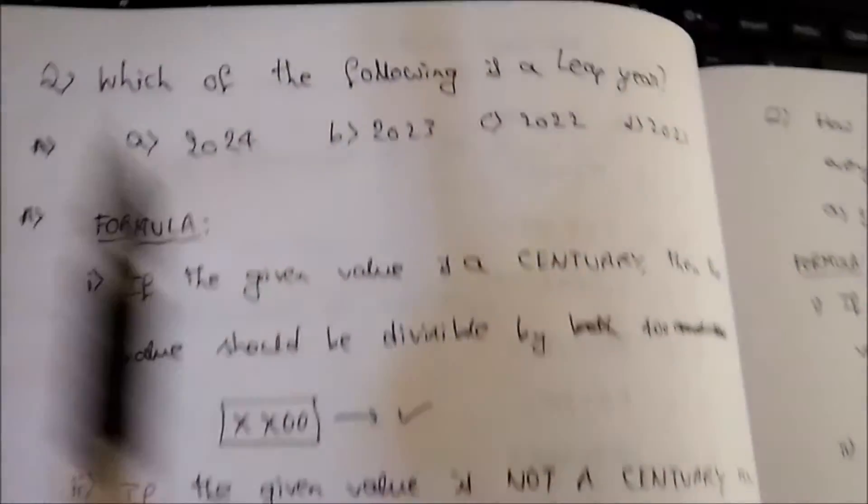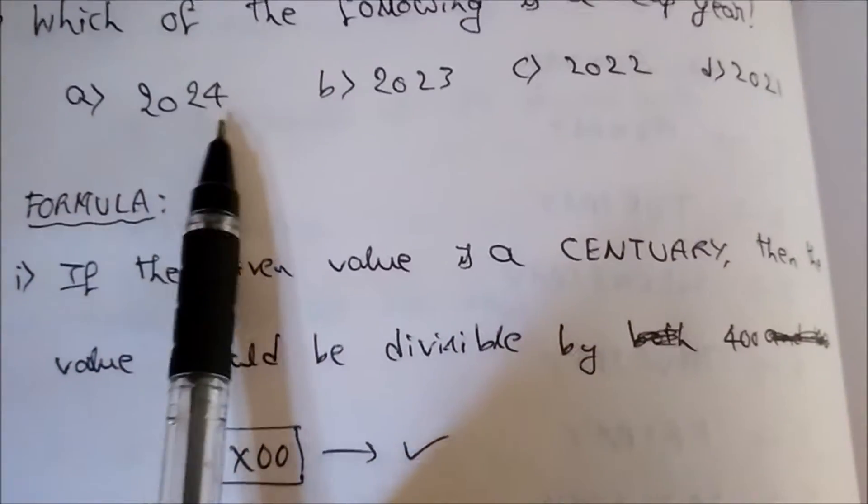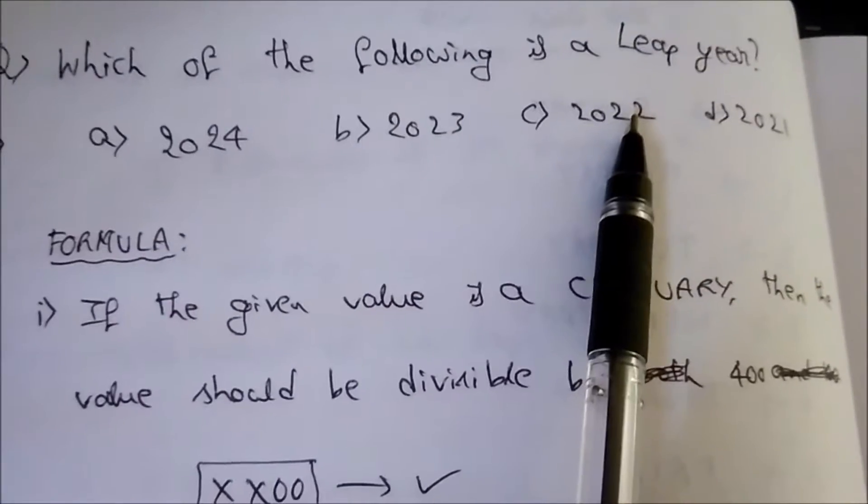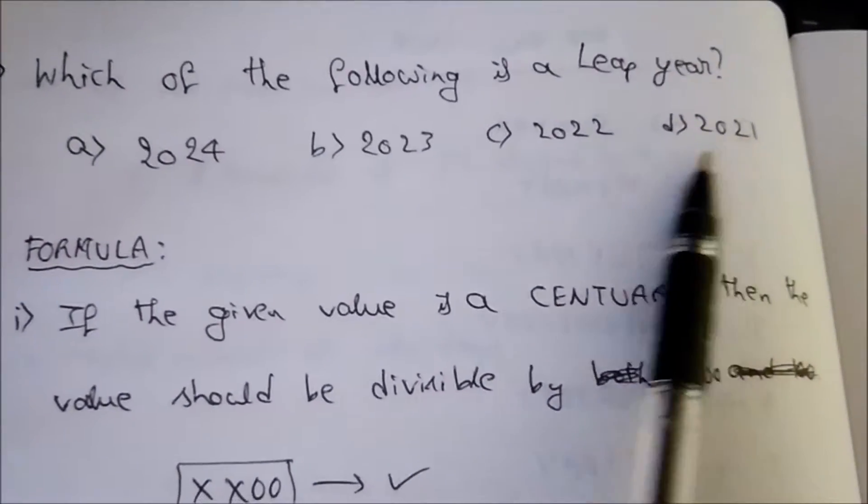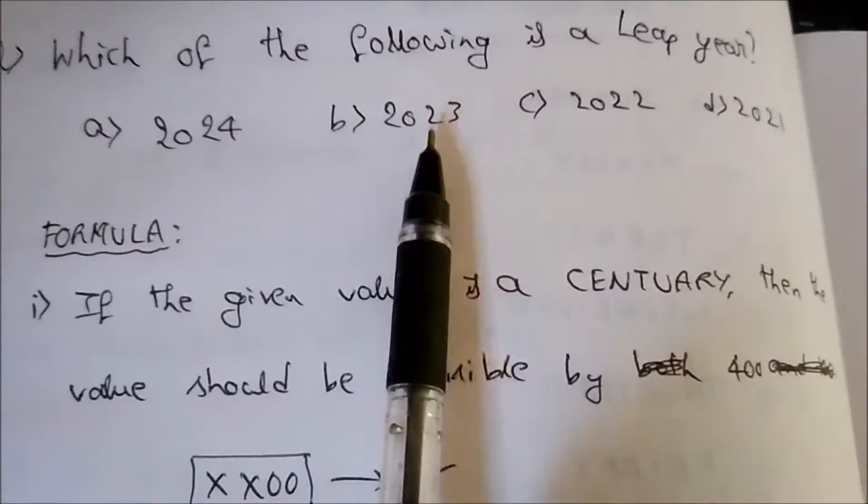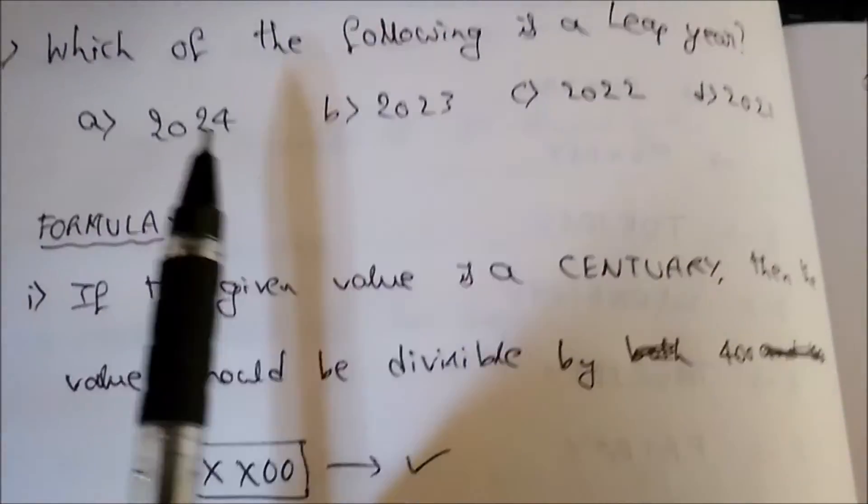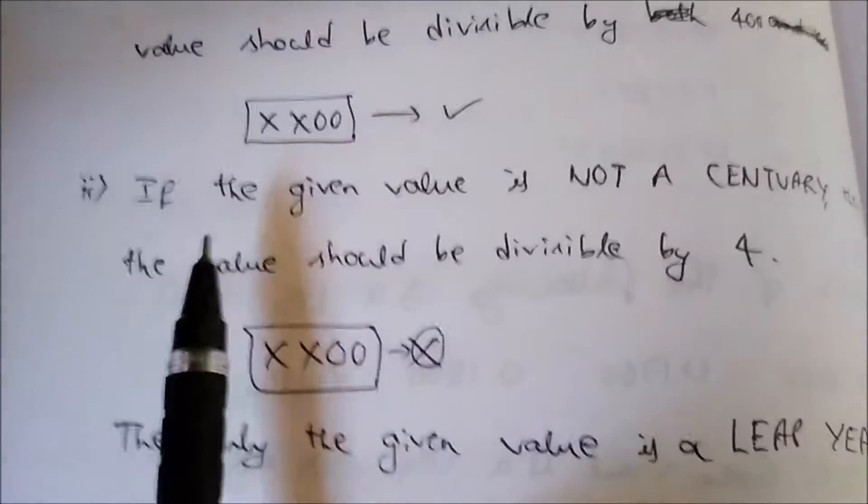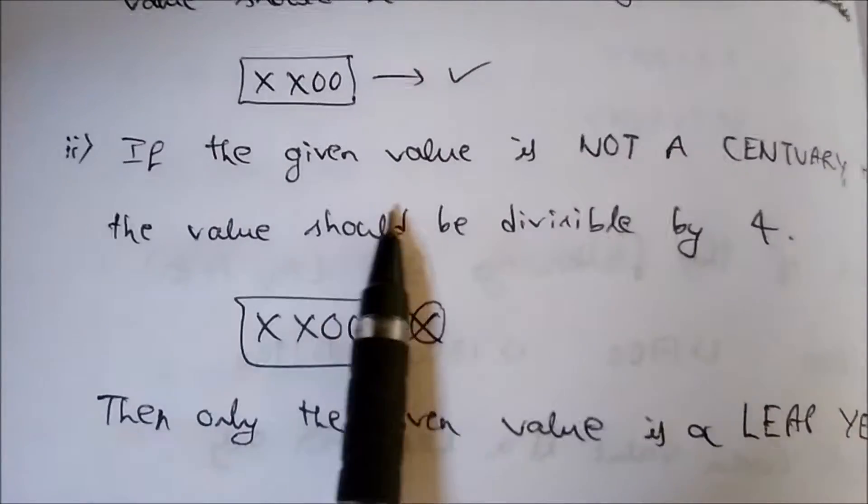Let me check the values. Given values: 2024, 2023, 2022, 2021. Here the last two digits are non-zeros, hence these are not centuries. So we need to apply the second formula: if the given value is not a century, then the value should be divisible by 4.